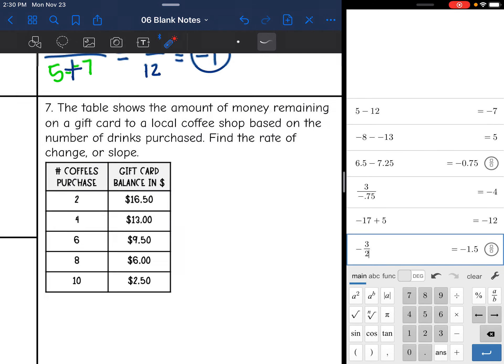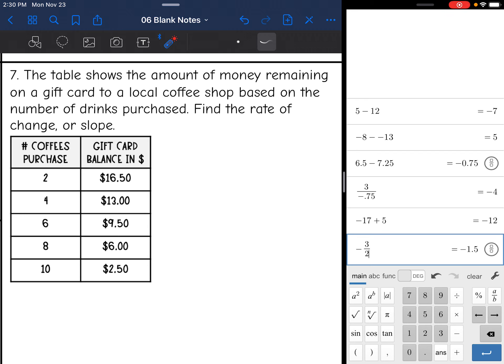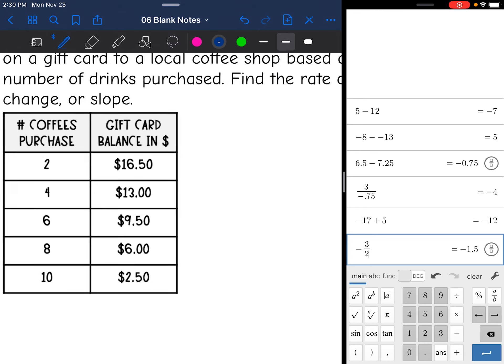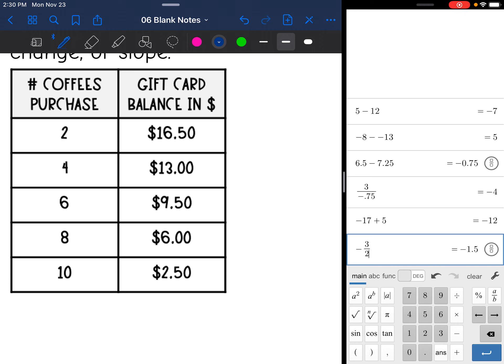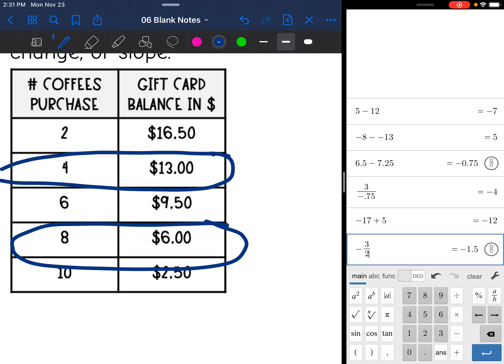Okay, last one. It says the table shows the amount of money remaining on a gift card to a local coffee shop based on the number of drinks purchased. Find the rate of change or slope. So again, you can choose any two points from the table to find the slope, choose the ones that are easiest for you. So I'm going to choose the whole numbers, I'm going to use this ordered pair and this ordered pair. And now let's label them x1, y1, x2, y2. It does not matter what order you label them in, you could label this second one x1 as long as you match y1 with it.